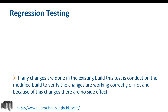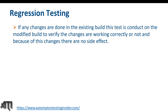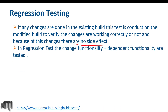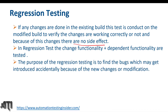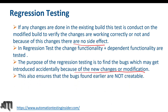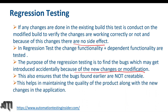Now let's talk about regression testing. If any changes are done in the existing build, this test is conducted on the modified build to verify that the changes are working correctly and that these changes have no side effects — that is the main purpose of regression testing. In regression testing, the changed functionality plus dependent functionalities are tested. The purpose is to find any bugs that may be introduced accidentally because of new changes or modifications, and to ensure that bugs found earlier are not recreated.